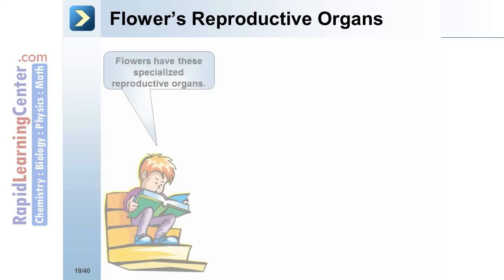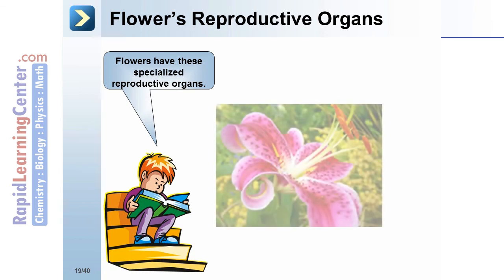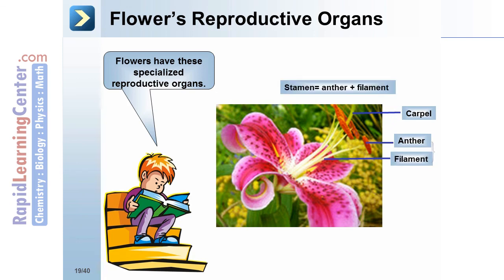Flowers are the reproductive organs of plants. They have specialized reproductive structures including the carpel, anther, filament — where the stamen equals the anther plus the filament — as well as the petal and the sepal.